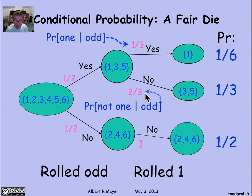Likewise, this number 2 thirds is the probability that you didn't roll a 1 given that you rolled an odd number. And finally, this number is the probability that you didn't roll a 1 given that you rolled an even number. And it's certain.